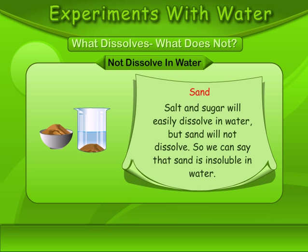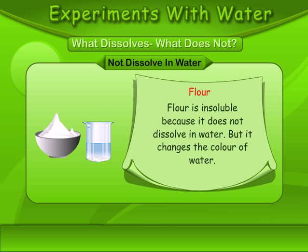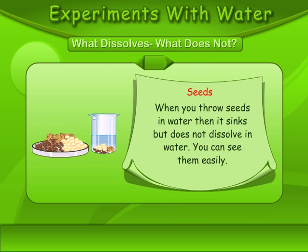Sand will not dissolve in water, so we can say that sand is insoluble in water. Flour is also insoluble because it does not dissolve in water, but it changes the color of water. When you throw seeds in water, they sink but do not dissolve — you can see them easily.